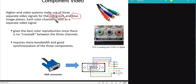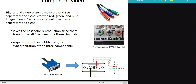In a component video interface, there are three cables: one for red, one for green, and one for blue. Each color's video signal is transmitted via its own dedicated channel. So the red video signal is produced from the red image and communicated via the red cable, and similarly for green and blue.